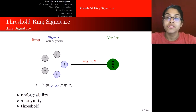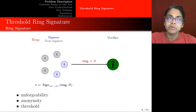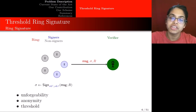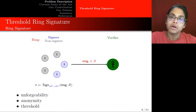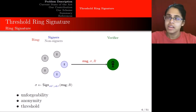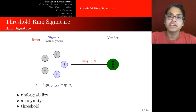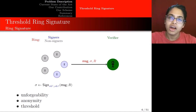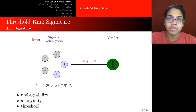Finally we have a Threshold Ring Signature. Now you have multiple signers who are going to work together, each using their individual secret keys to produce a message on behalf of the ring. The verifier, upon receiving the signature, is going to be convinced that at least threshold-many signers must have participated, but he doesn't know which particular members it was. So we retain unforgeability and anonymity — we just have a threshold version of both of those notions.